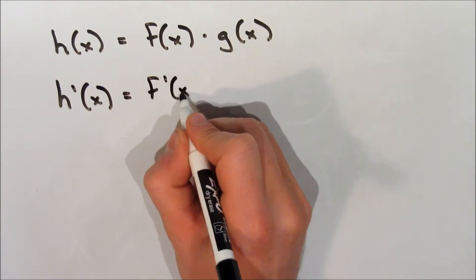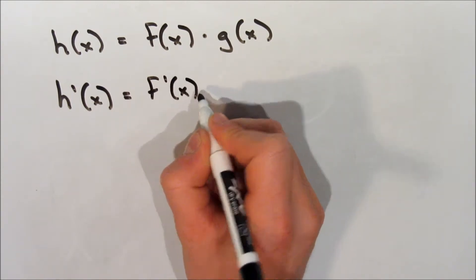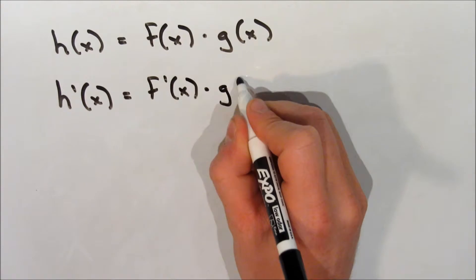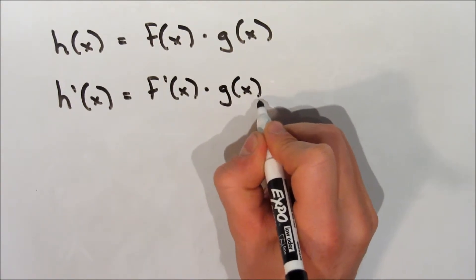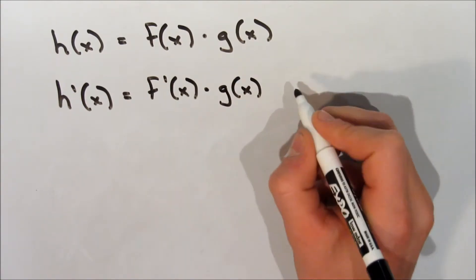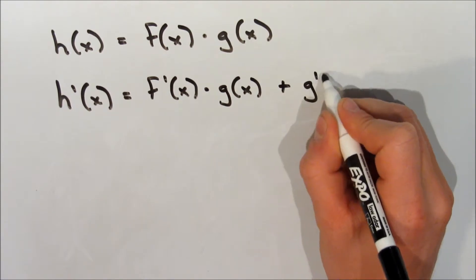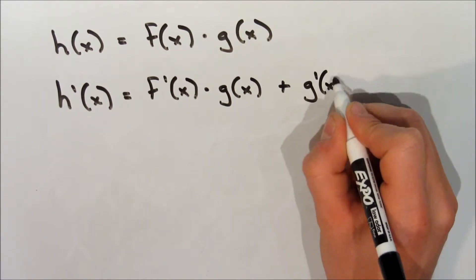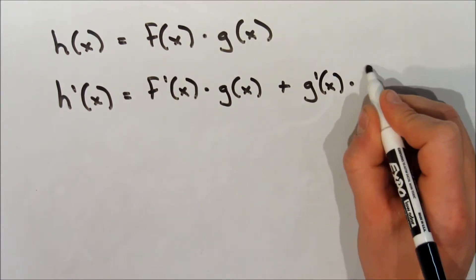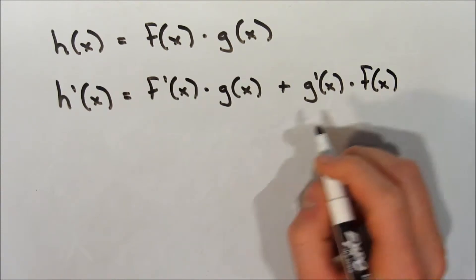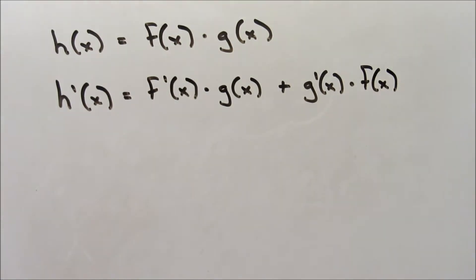...equal to the derivative of the first function, f prime of x, multiplied by just the second function, and then we're going to add the derivative of the second function, g prime of x, multiplied by just the first function, f of x. Now let's take a look at a couple of examples — it might make a little more sense this way.